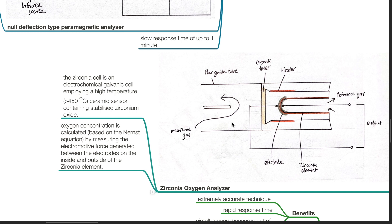The zirconia oxygen analyzer: the zirconia cell is an electrochemical galvanic cell employing a high temperature of more than 450 degrees Celsius, using a ceramic sensor containing stabilized zirconium oxide. Oxygen concentration is calculated based on the Nernst equation by measuring the electromotive force generated between the electrodes on the inside and outside of the zirconia element.